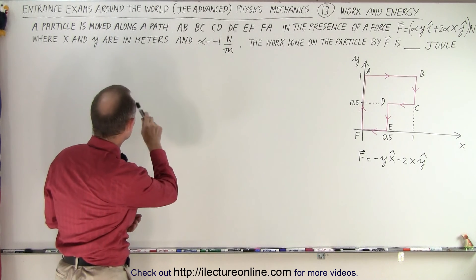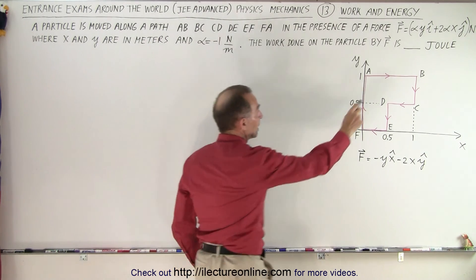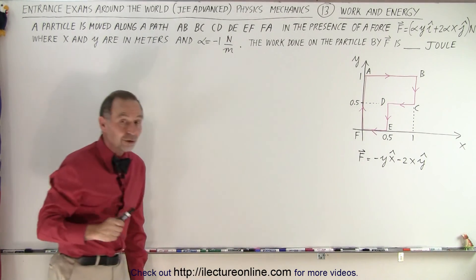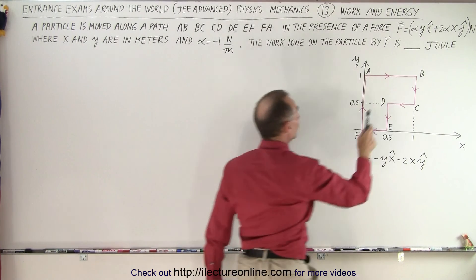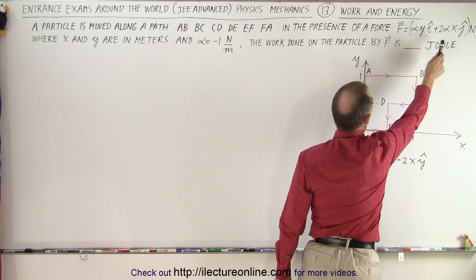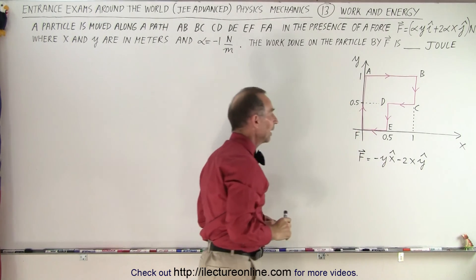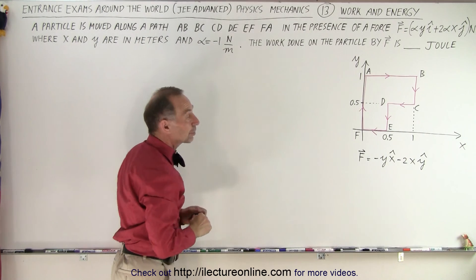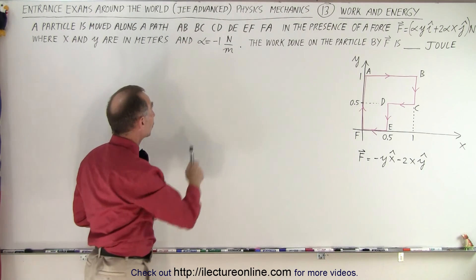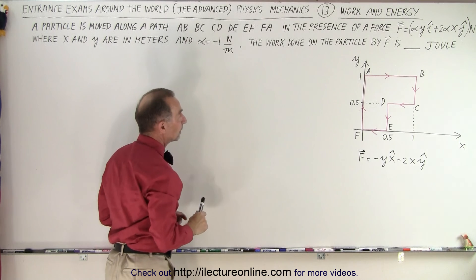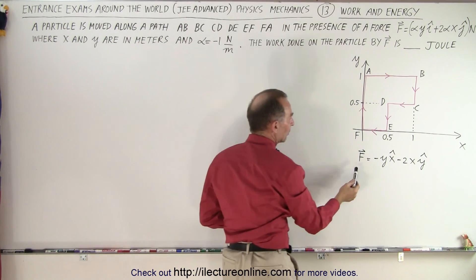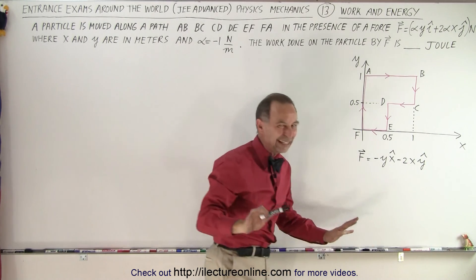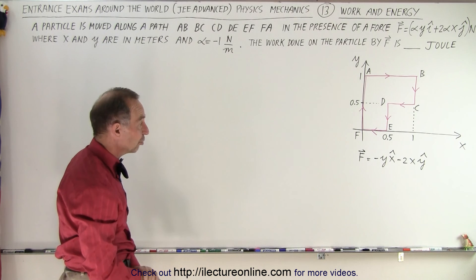We have a particle that is moved along a path from A to B to C to D to E to F and back to A. It's in the presence of a force defined as follows: alpha·Y in the i-direction plus 2·alpha·X in the j-direction in Newtons. We're supposed to find the work done on the particle by that force. Notice that alpha is defined as negative 1 Newtons per meter, so the force simplifies to negative Y in the x-direction minus 2X in the y-direction.